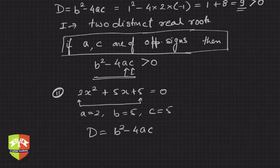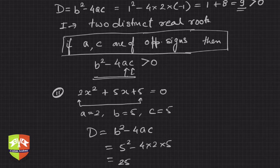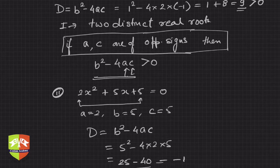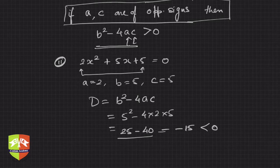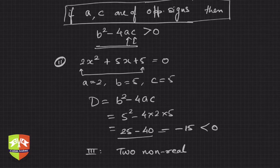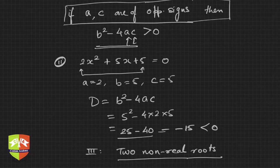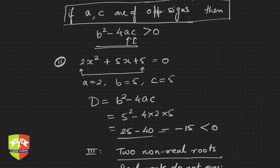The discriminant D = b² - 4ac = 5² - 4 × 2 × 5 = 25 - 40 = −15, which is less than 0. So we get Case 3 — two non-real roots. In other words, real roots do not exist.